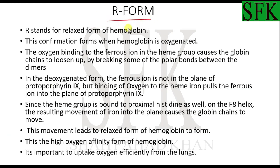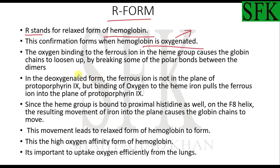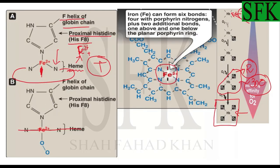Now let's talk about the R conformation. R means relaxed — the relaxed conformation of hemoglobin. This forms when hemoglobin is oxygenated. When it gets oxygenated, some of the polar bonds break, allowing the dimers to move relative to one another. Subsequent addition of oxygen molecules allows hemoglobin to gain an even more relaxed state, allowing it to accept more oxygen molecules more easily. Oxygen binding to the ferrous ion in the heme group causes the globin chains to loosen by breaking some of the polar bonds between the dimers.